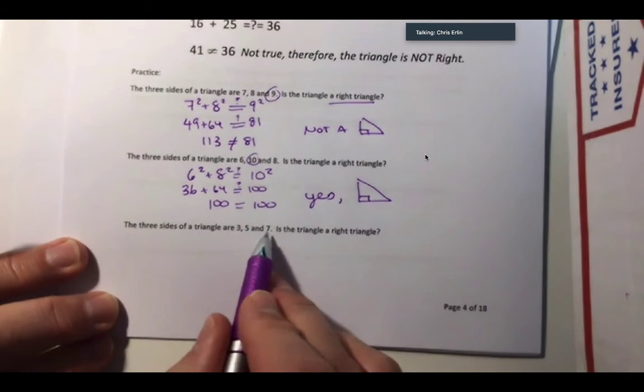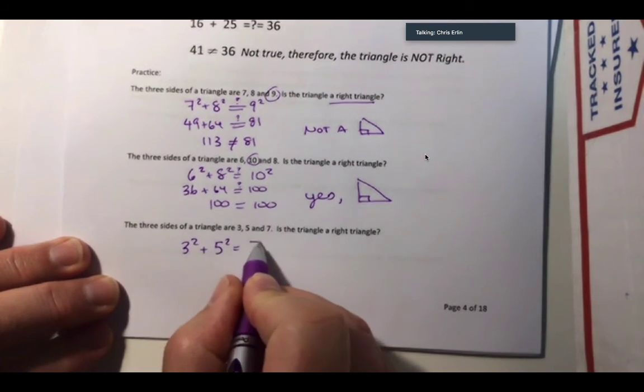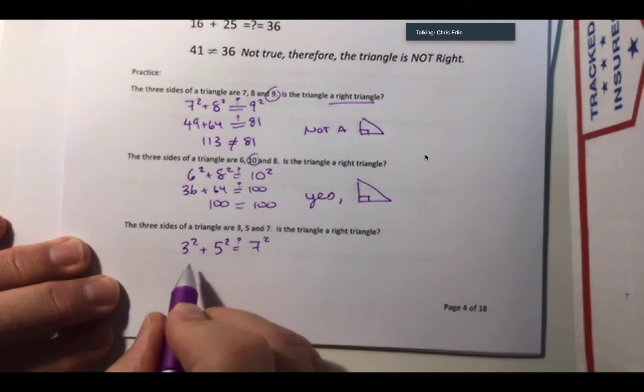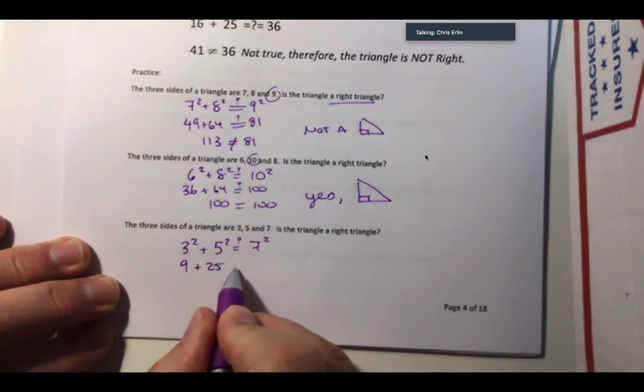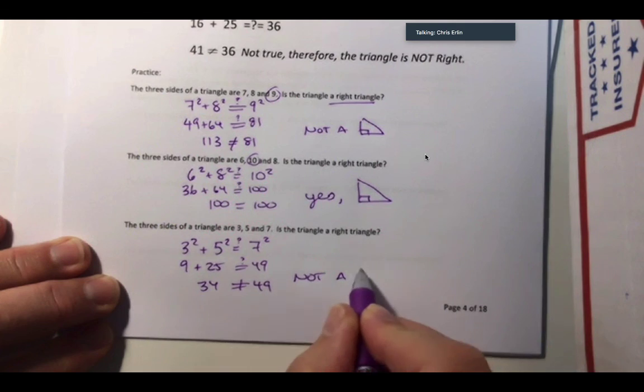Third scenario, 3, 5, and 7. So I would say 3 squared plus 5 squared is equal to 7 squared. I don't know if that's true yet. 9 plus 25 is maybe equal to 49. 34, no, that's not equal to 49. So not a right triangle.